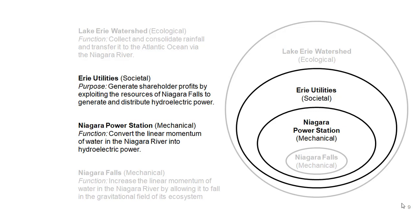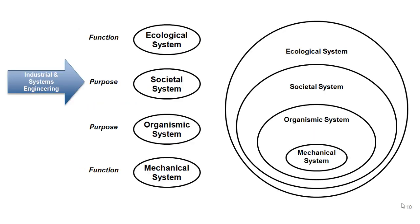Keeping track of the four classes of systems, industrial engineers will typically work on societal systems — creating new roles for organismic systems and new mechanical systems — always in the context of an ecological system. When defining a system as an engineer, be clear on what kind of system you're working on. As an industrial or systems engineer, you almost always work on a societal system, affecting it through altering its ecological environment, changing job descriptions for organismic systems, and engineering mechanical systems that serve the organization's basic functions.